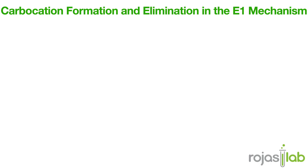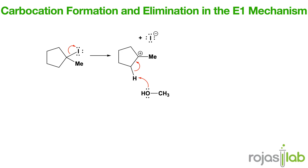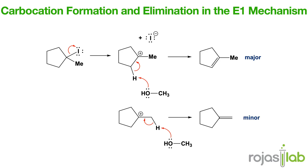The E1 mechanism is a two-step elimination reaction through a carbocation intermediate. In the first step, the leaving group departs, forming a carbocation. Next, a base abstracts the beta hydrogen, resulting in double bond formation. Key points are that this reaction competes with SN1-type reactions, E1 mechanisms are favored by weak bases and polar protic solvents, and you generally produce the more substituted, or Zaitsev, alkene.